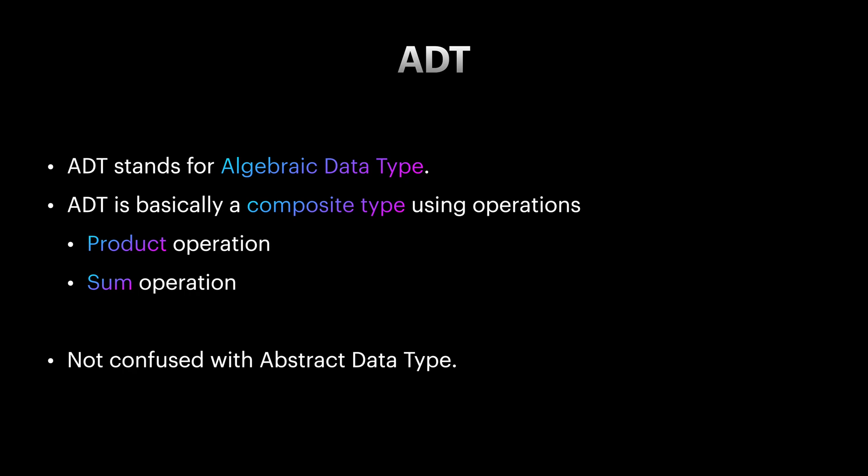Alright, we talked about how to create composite types. But eventually we want to use the data stored inside them. Consider the option of boolean type. Let's say we want to create a function that converts this option type to a string. How can we do this? We know that option types are sum types and they have two variants: None and Some.